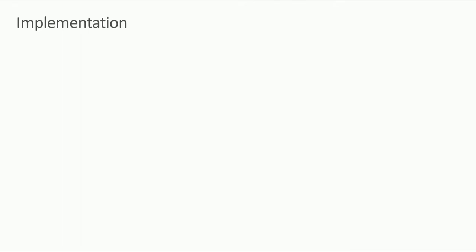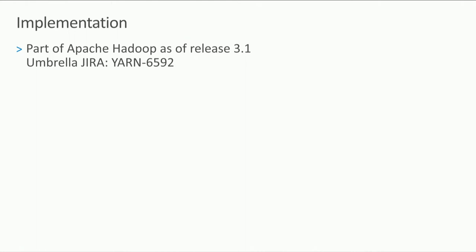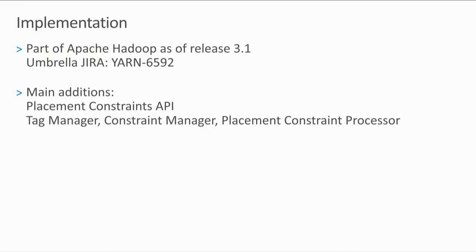Implementation details: this is part of Apache Hadoop 3.1, tracked under YARN JIRA 6592. The main additions are the constraints API and three new modules in the Resource Manager: the tag manager, the constraint manager, and the placement constraint processor. This is a community effort — contributors include Arun from Microsoft, Weiwei from Alibaba, Panagiotis from Imperial College, Sunil, and many more involved over the last couple of years.